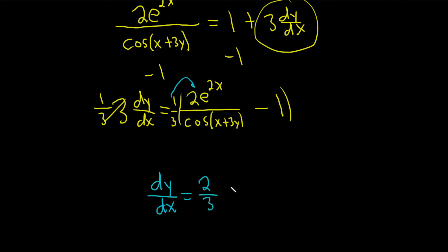2/3 e^(2x) over cosine of x plus 3y, and then distribute the 1/3 here will give us minus 1/3.